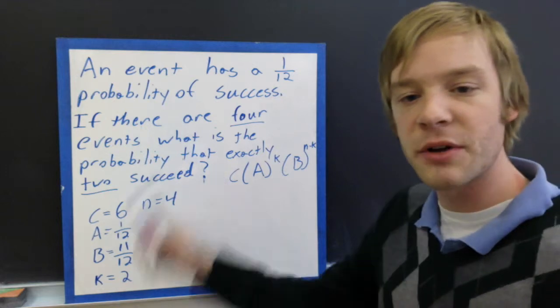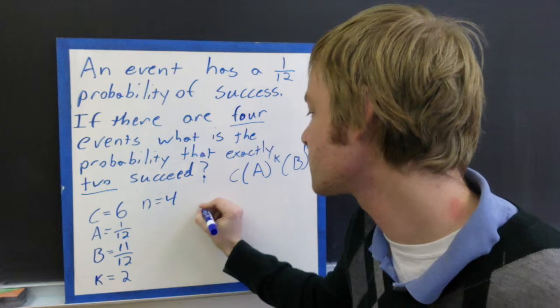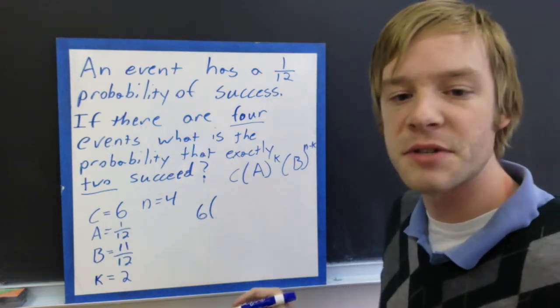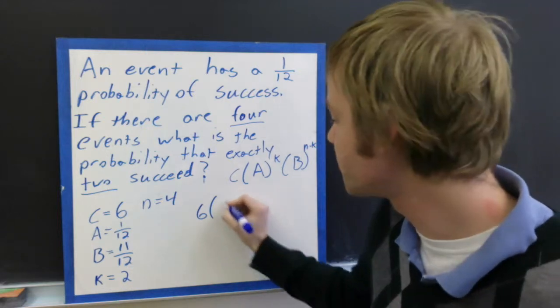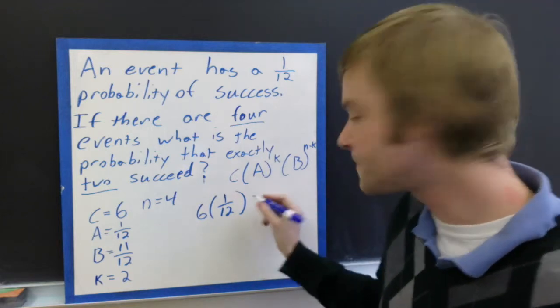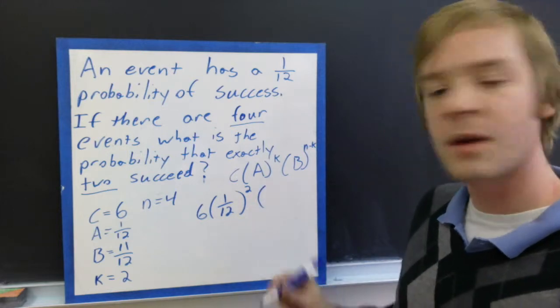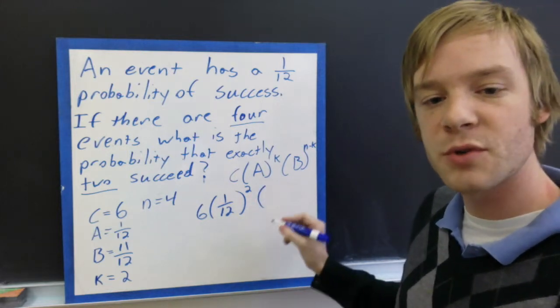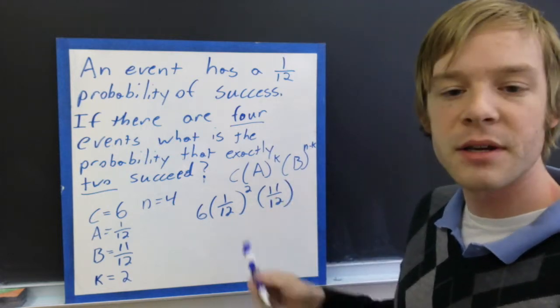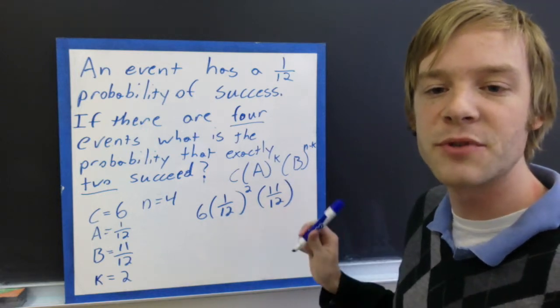So now all I have to do is plug these into this right here. I start with 6, and then I'm going to put my probability inside the parentheses here. So I'm going to have 1 over 12, my power is going to be 2. And then b will be 11 over 12. And then if we have 4 minus 2, that will also give us a power of 2 over here.